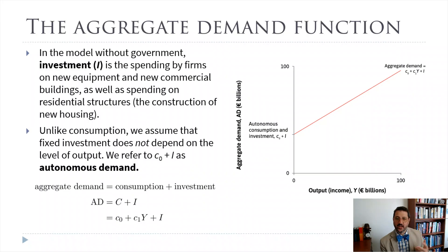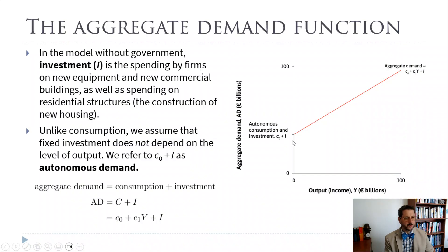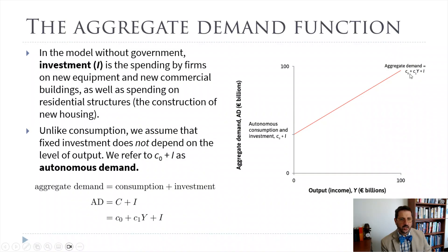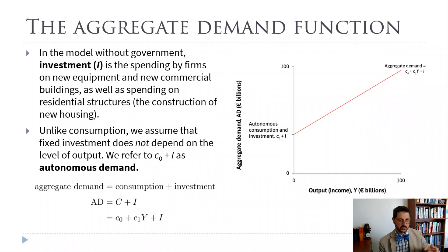Adding in investment — for now, we're just going to assume that investment is a fixed amount. Adding that in just shifts up our aggregate demand curve, so now our vertical intercept is our autonomous consumption C0 plus investment I. In more complicated models, investment might depend on output, but for now we'll have it as a fixed amount. Our aggregate demand function is C0 plus C1Y plus this fixed amount I, and it has the same slope as before, equal to C1, which is less than one.